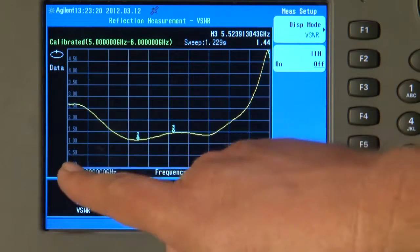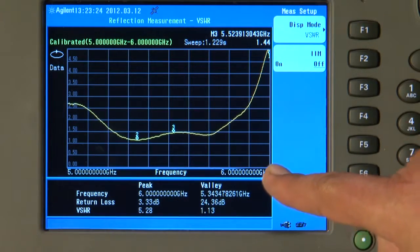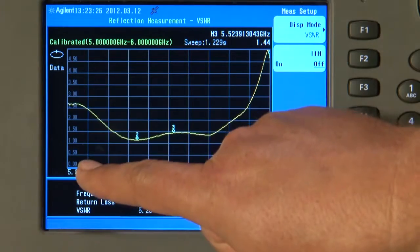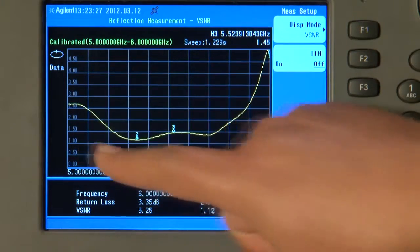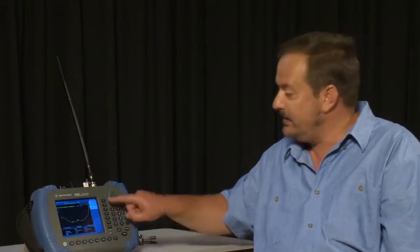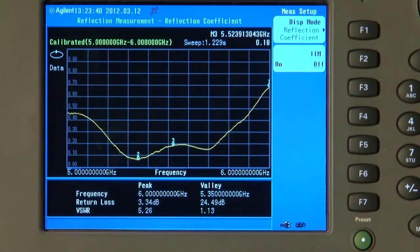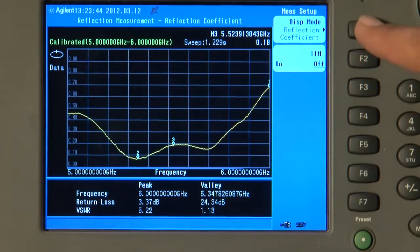So the X axis is still showing frequency from 5 to 6 GHz, but the Y axis is now displaying VSWR. And if we prefer, we can measure reflection coefficient. I will go back to return loss for now.